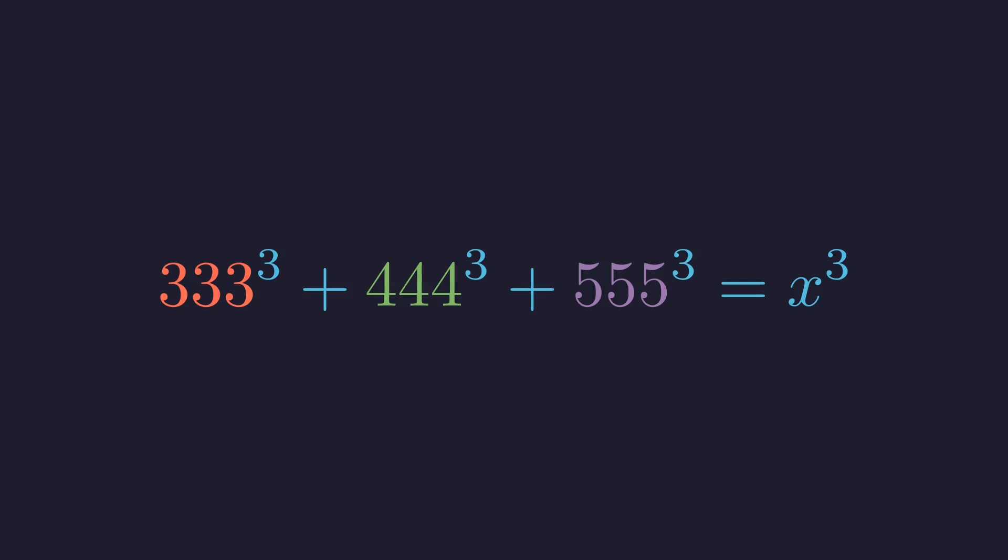Here's the key. These numbers aren't random. 333, 444, 555. Notice anything? They're all repeating digits. And that's our first clue. Each one is actually a multiple of 111. And that simple observation is about to unlock a beautiful identity that's been hiding in plain sight.